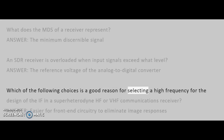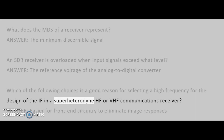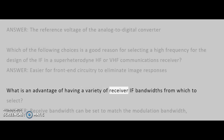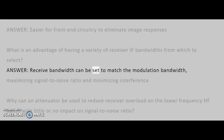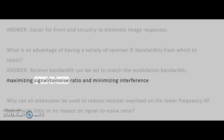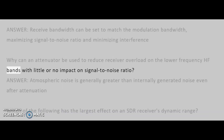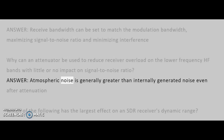Which of the following is a good reason for selecting a high frequency for the design of the IF in a super-heterodyne HF or VHF communications receiver? Answer: Easier for front-end circuitry to eliminate image responses. What is an advantage of having a variety of receiver IF bandwidths from which to select? Answer: Receive bandwidth can be set to match the modulation bandwidth, maximizing signal-to-noise ratio and minimizing interference. Why can an attenuator be used to reduce receiver overload on the lower-frequency HF bands with little or no impact on signal-to-noise ratio? Answer: Atmospheric noise is generally greater than internally generated noise even after attenuation.